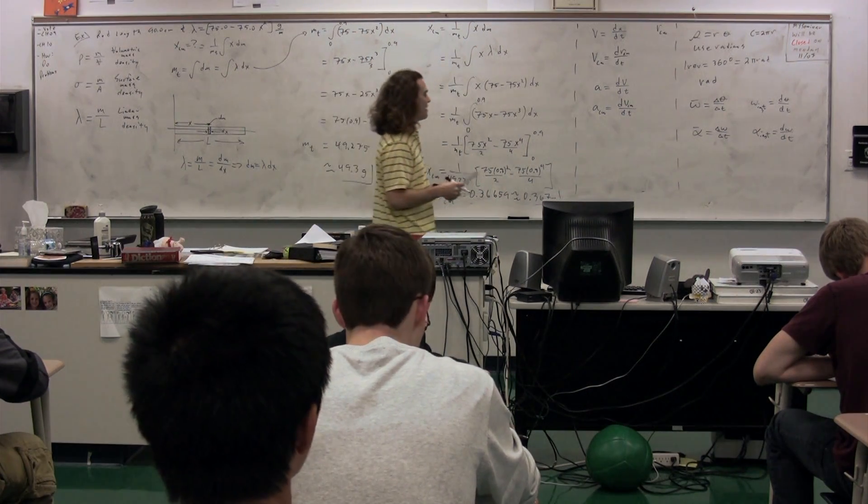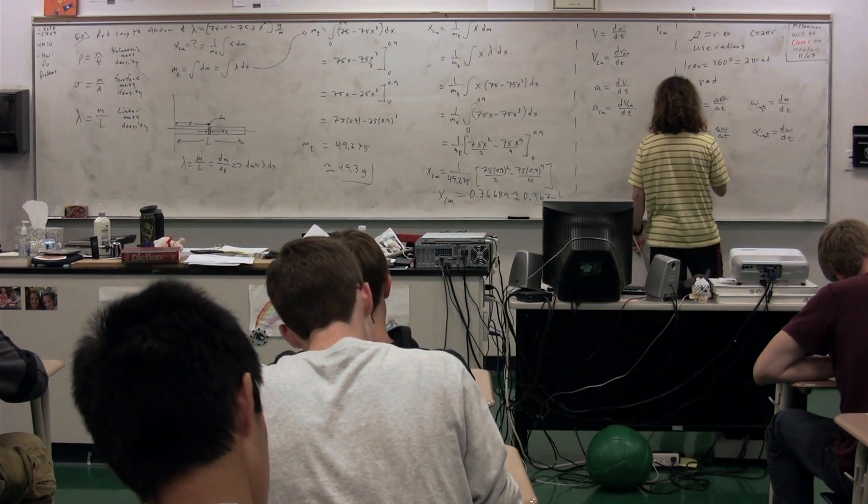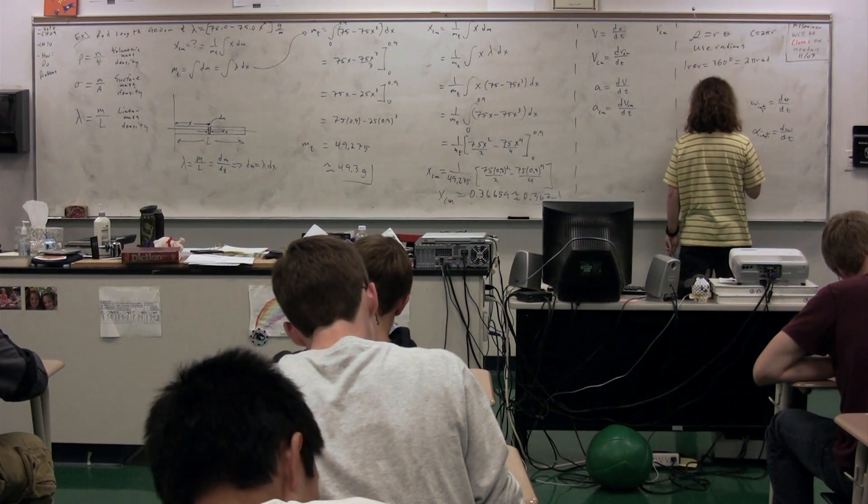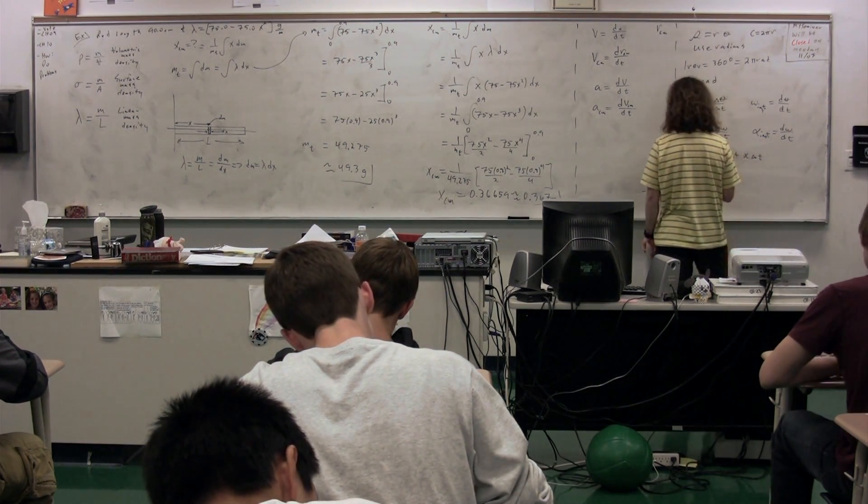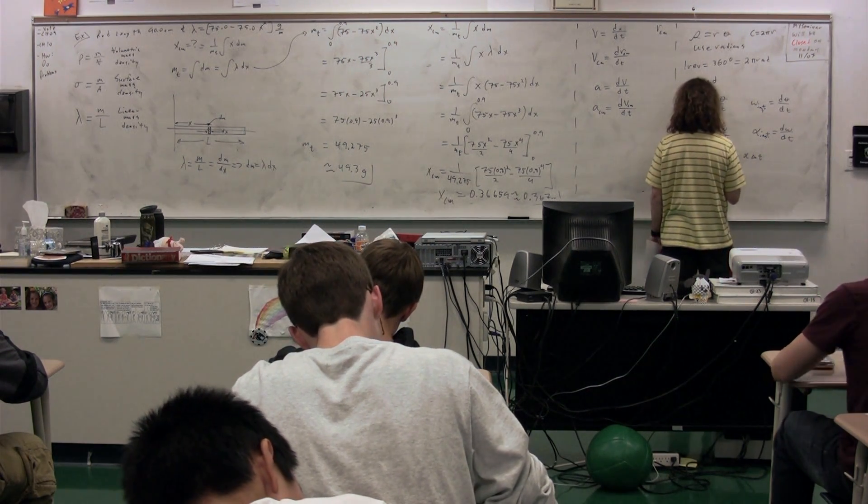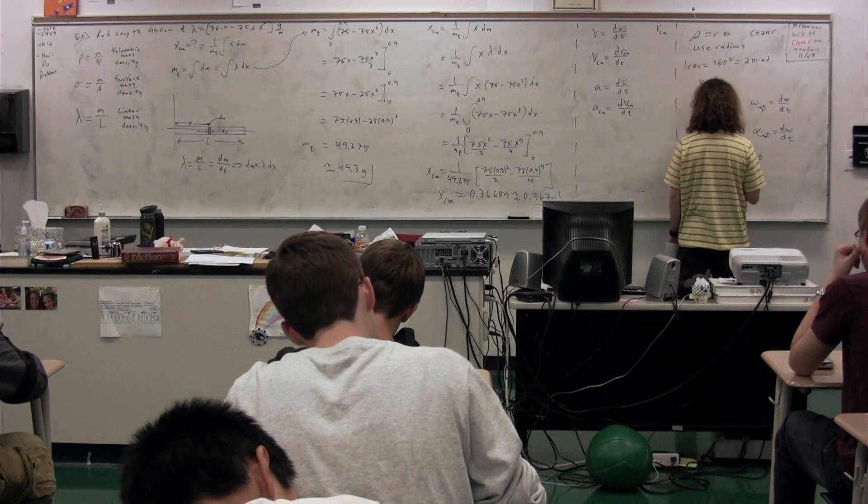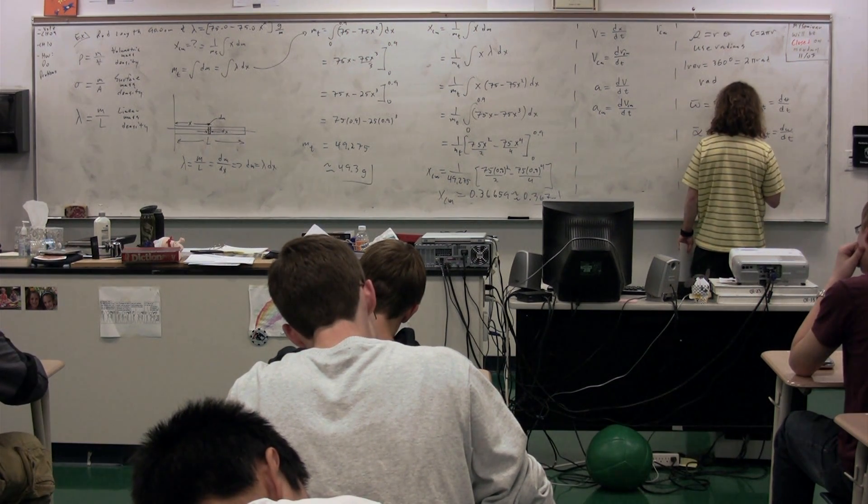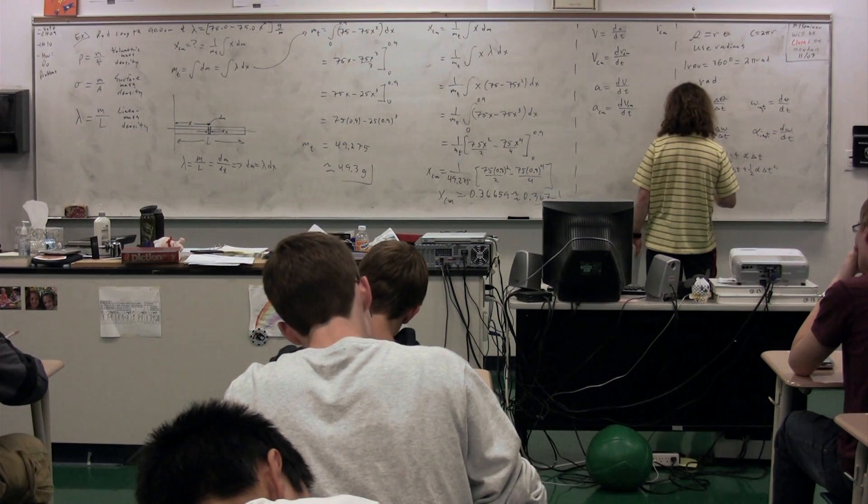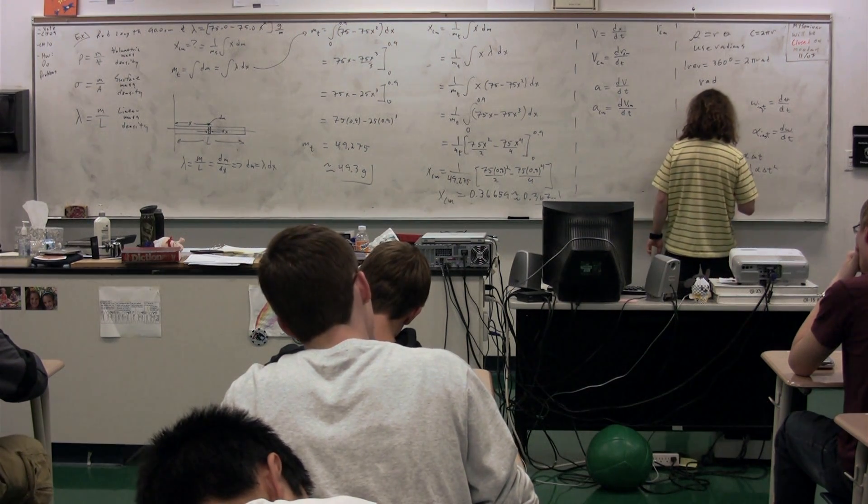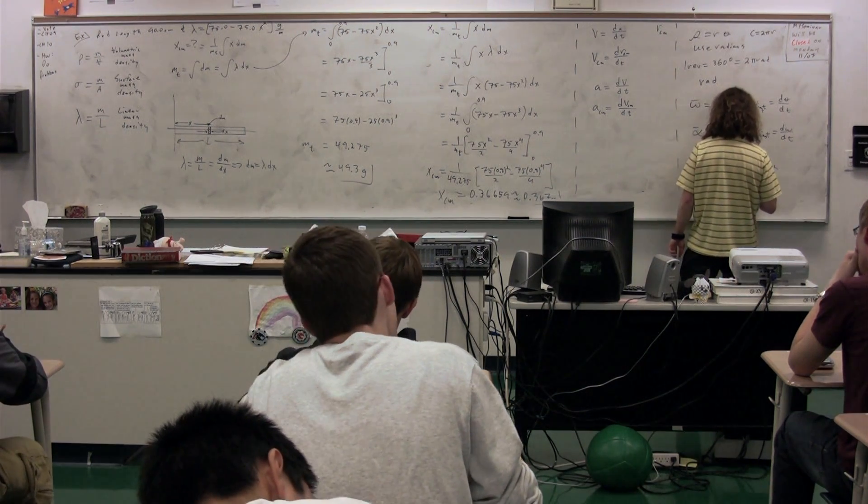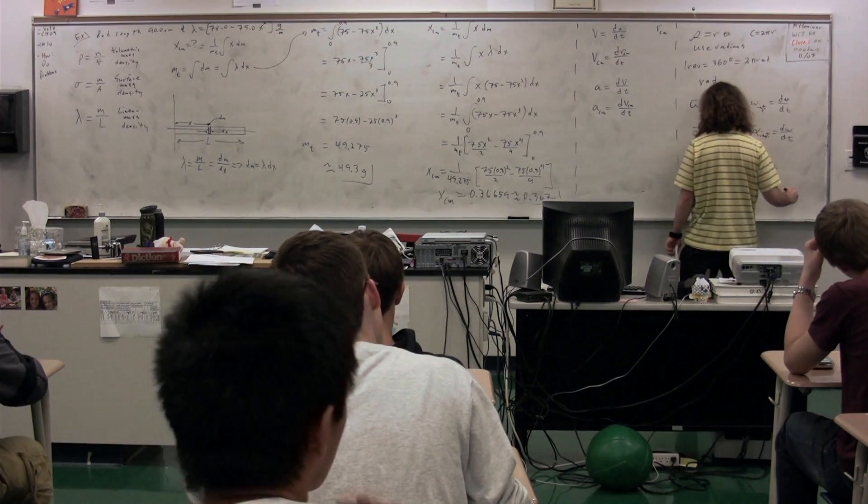We also have our u-fishy-m equations. Omega final equals omega initial plus angular acceleration times delta t. Change in theta equals omega initial times delta t plus 1 half angular acceleration times delta t squared.